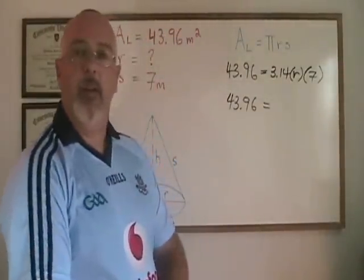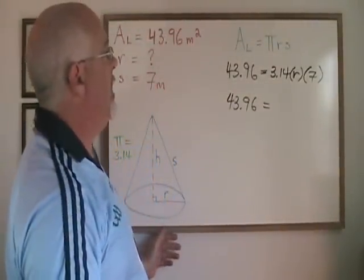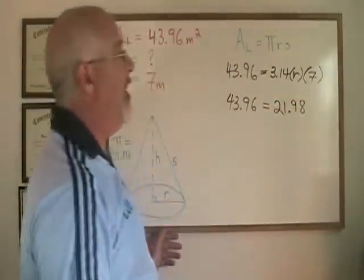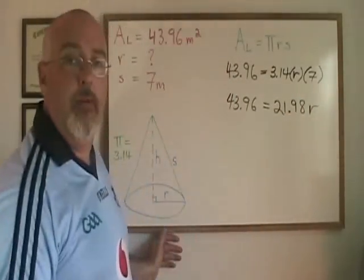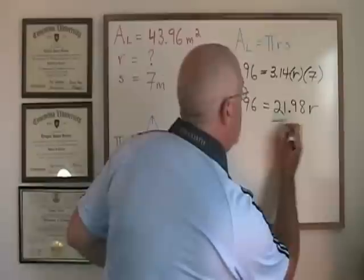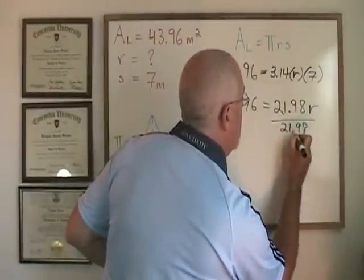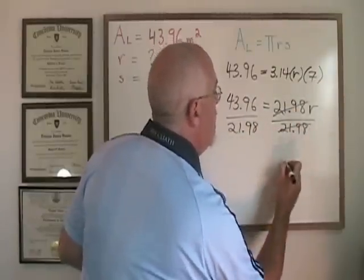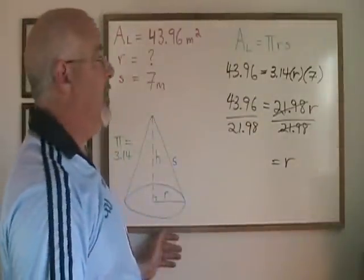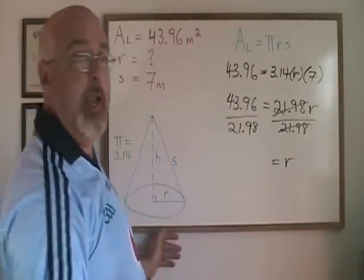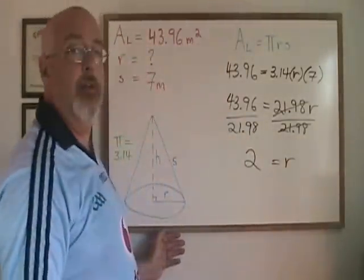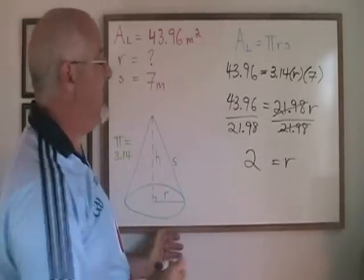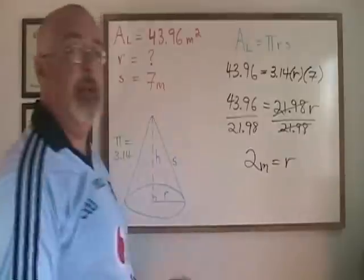The first thing I'm going to do is multiply 7 times 3.14, which is 21.98, and r is still there. Now if we divide both sides by 21.98, these cancel. My r is isolated and is equal to 43.96 divided by 21.98, which is 2. Because the unit of measure for area was meters squared, the unit of measure for distance like radius is meters, so we have 2 meters as our answer.